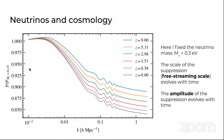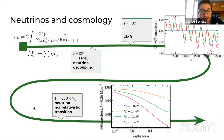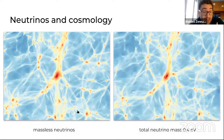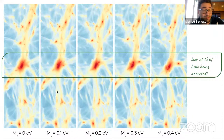An audience member asks about the scale of the pictures. The speaker confirms it is a 60 megaparsec wide picture for the larger view. For the smaller inset panels, the scale is roughly one-fourth to one-fifth of that — a few megaparsecs.